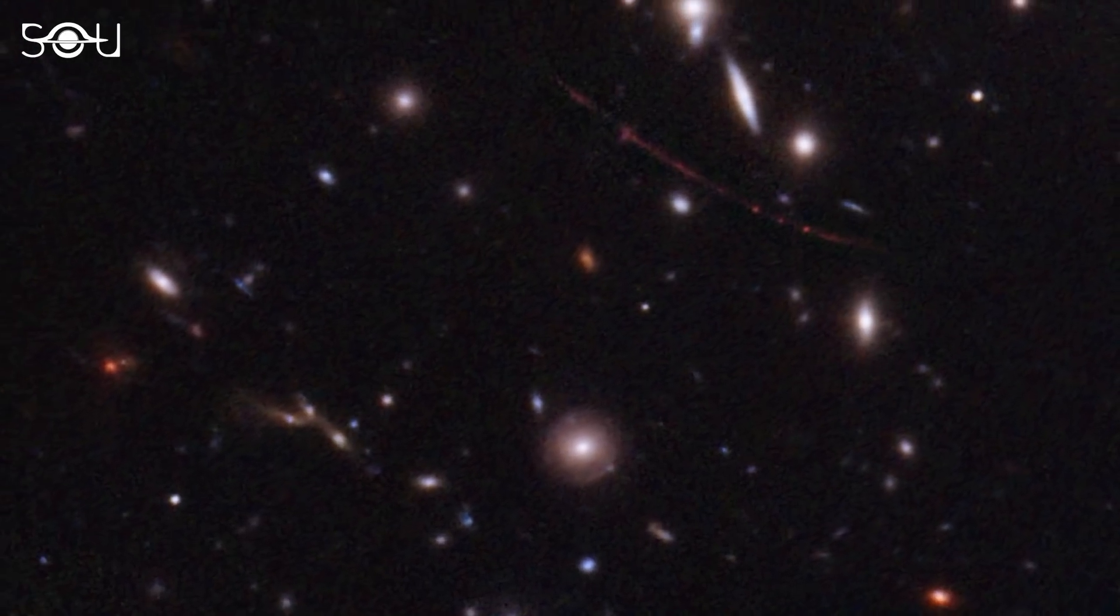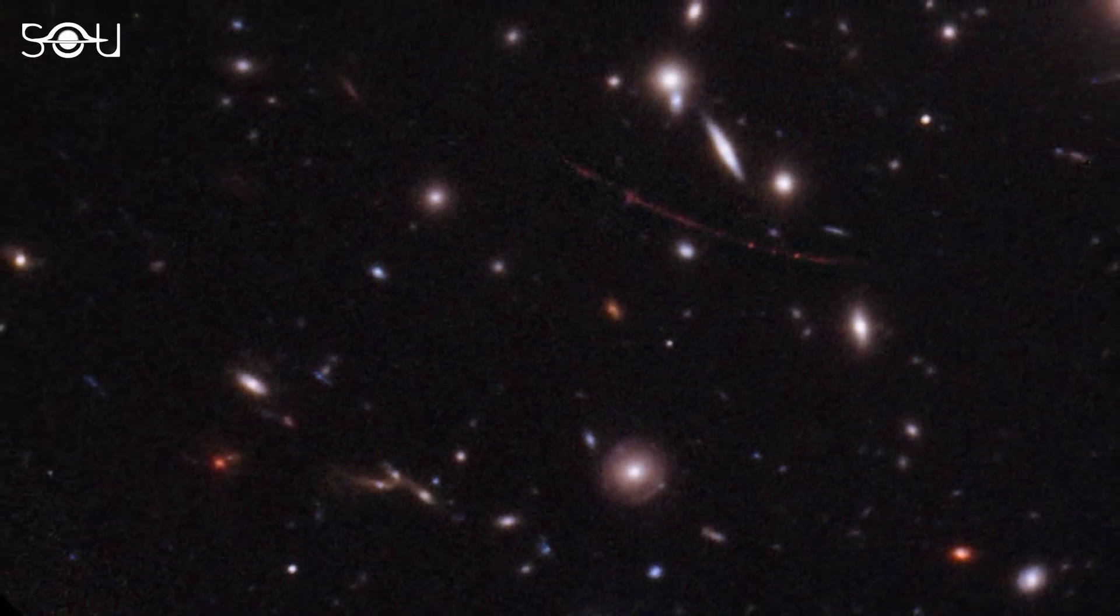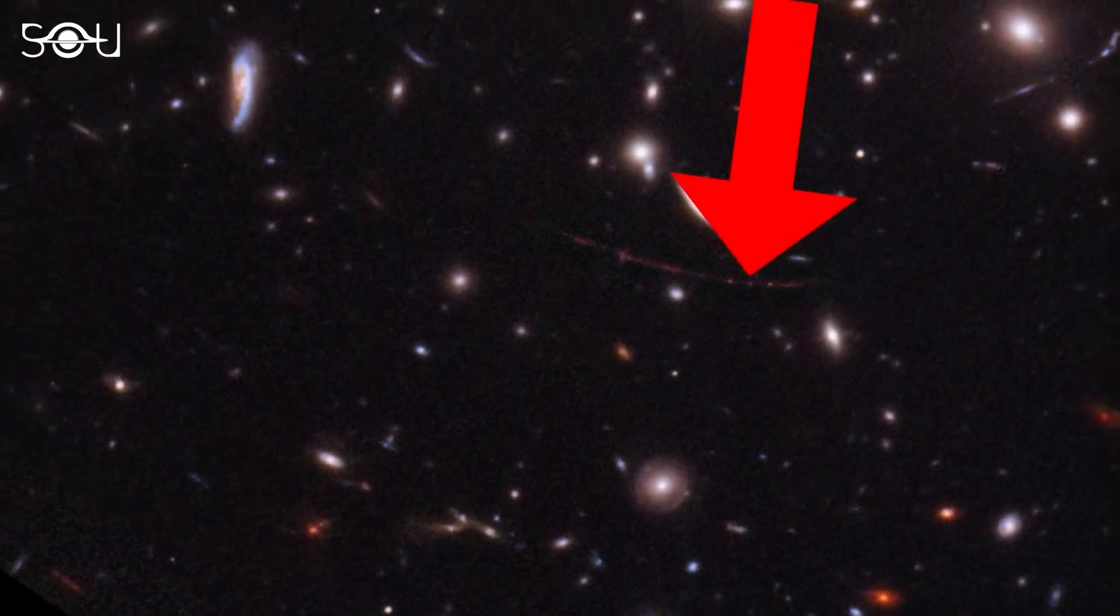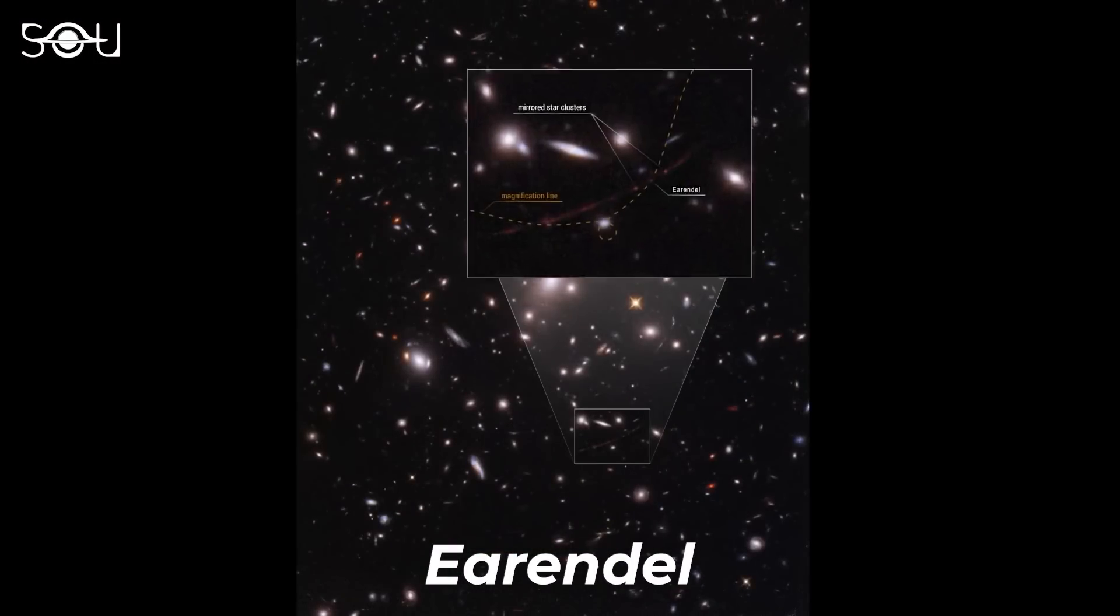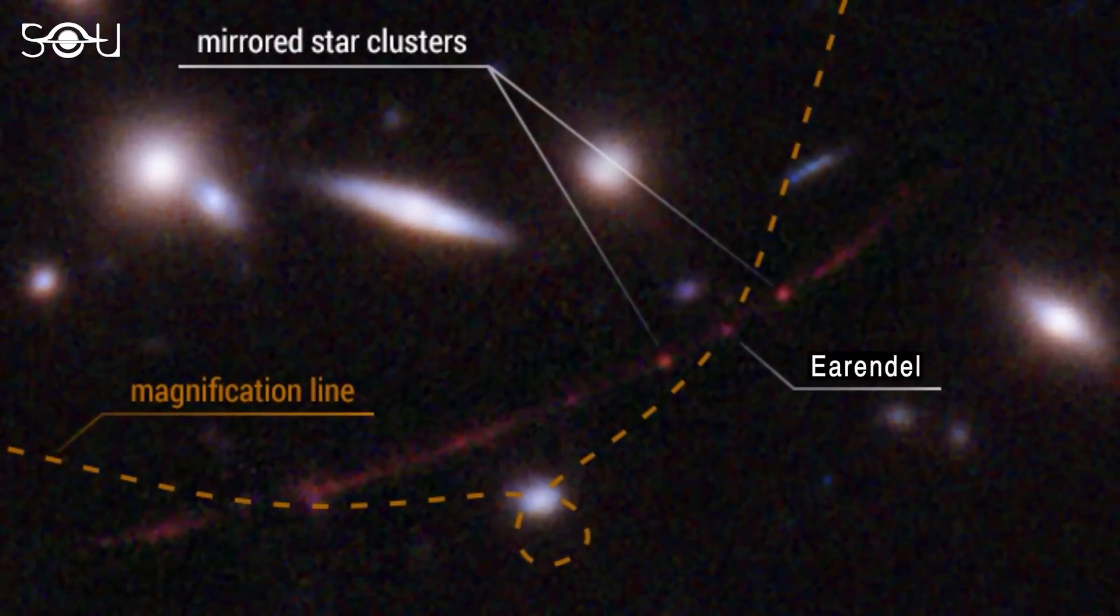This year, Hubble made another record by observing the farthest single star to date, Arendelle. Hubble first observed the star's parent galaxy that was gravitationally lensed by a galaxy cluster in the foreground.